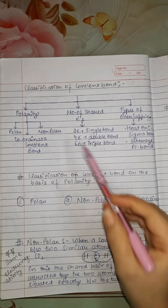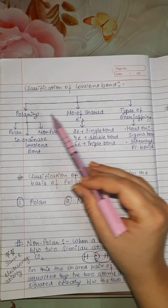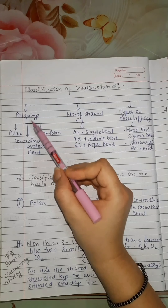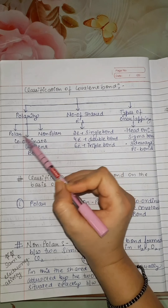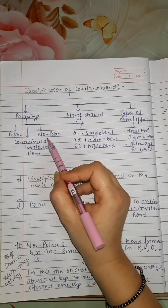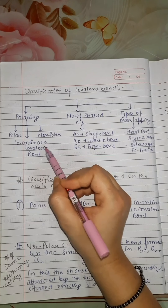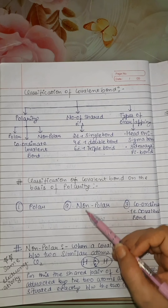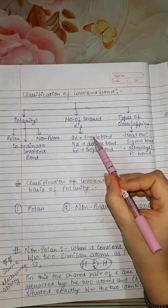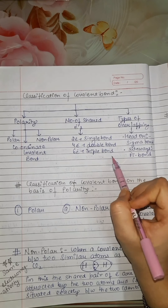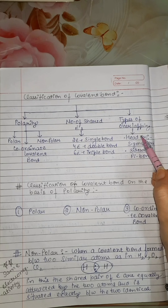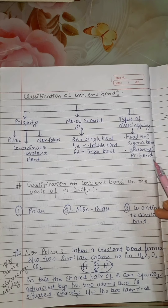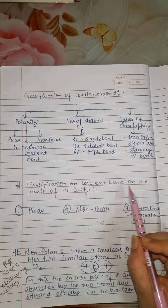Now let's see the classification of covalent bond. Covalent bond is classified on the basis of polarity, number of shared electrons, and types of overlapping. On the basis of polarity, covalent bond is of three types: polar covalent bond, non-polar covalent bond, and coordinate covalent bond. On the basis of number of shared electrons, covalent bond is divided into three types: single bond, double bond, and triple bond. And on the basis of overlapping, covalent bond is of two types: sigma bond and pi bond.